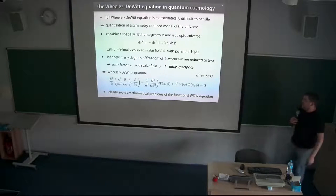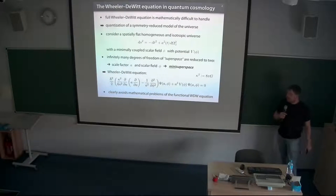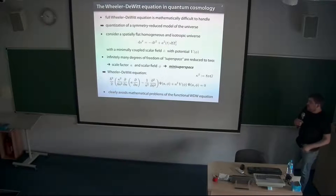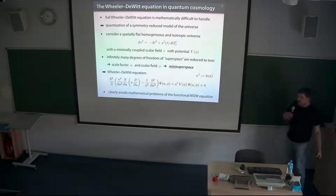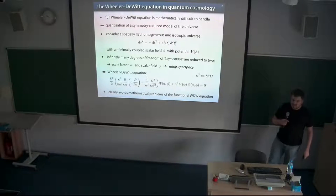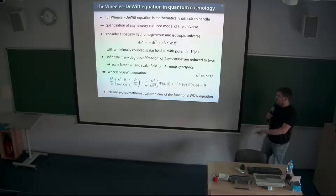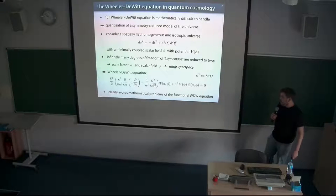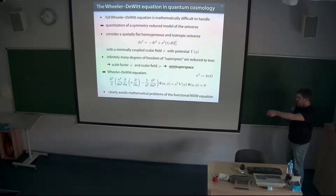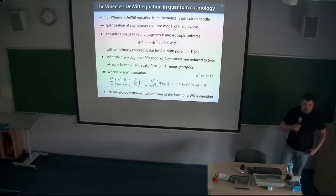This is the easiest case, but also because in the early universe, we mostly think that scalar fields are the important ones. So if you have the full superspace with infinite degrees of freedom, and you do such a symmetry reduction, then this gets reduced to just two degrees of freedom — the scalar field and the scale factor. As Claus mentioned, this is then called a mini-superspace. And in the Wheeler-DeWitt equation, instead of functional derivatives, you generally just have partial derivatives, which clearly avoids the mathematical problems of the full equation.